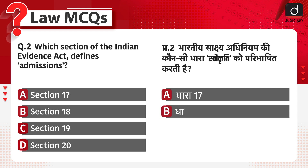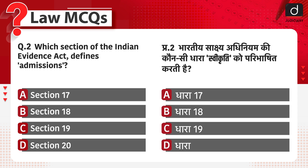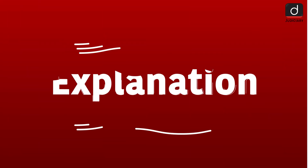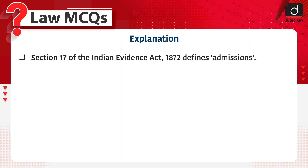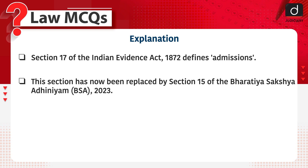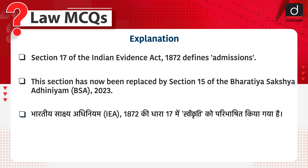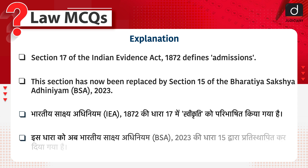The correct answer is option A, Section 17. Section 17 of the Indian Evidence Act 1872 defines admissions. This section has now been replaced by Section 15 of the Bhartiya Saakshi Aadhiniyam 2023. Bhartiya Saakshi Aadhiniyam 1872 ki dhara 17 mein swikriti ko paribhashit kiya gaya hai. Is dhara ko ab Bhartiya Saakshi Aadhiniyam 2023 ki dhara 15 dwara prathischthapit kar diya gaya hai.